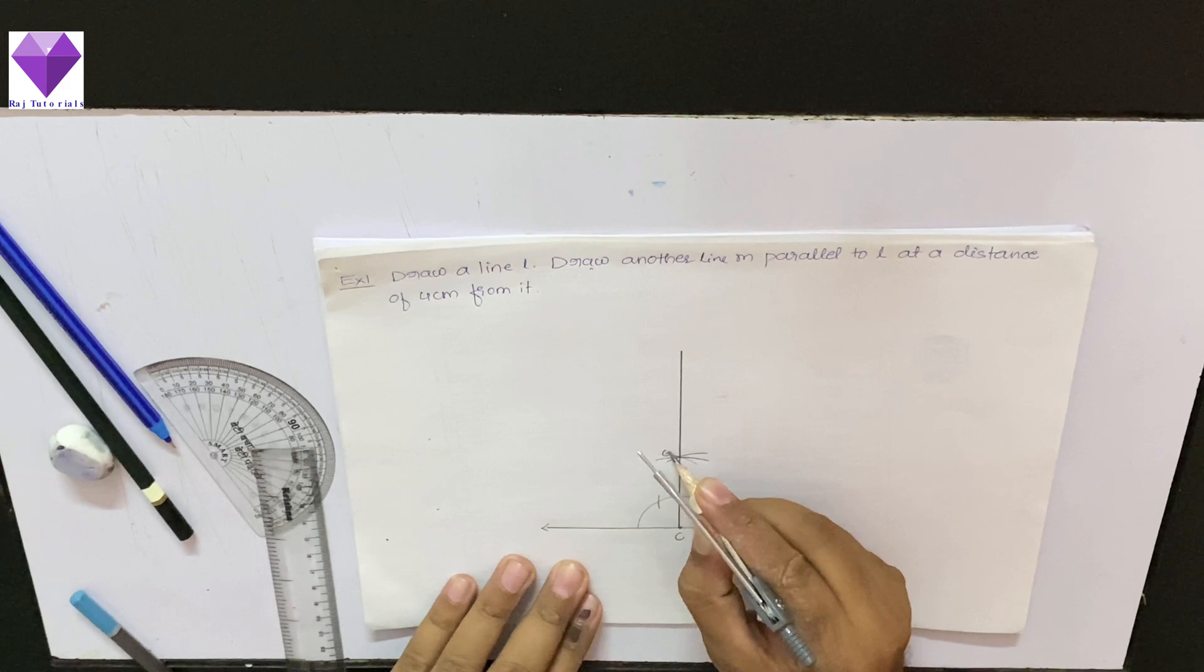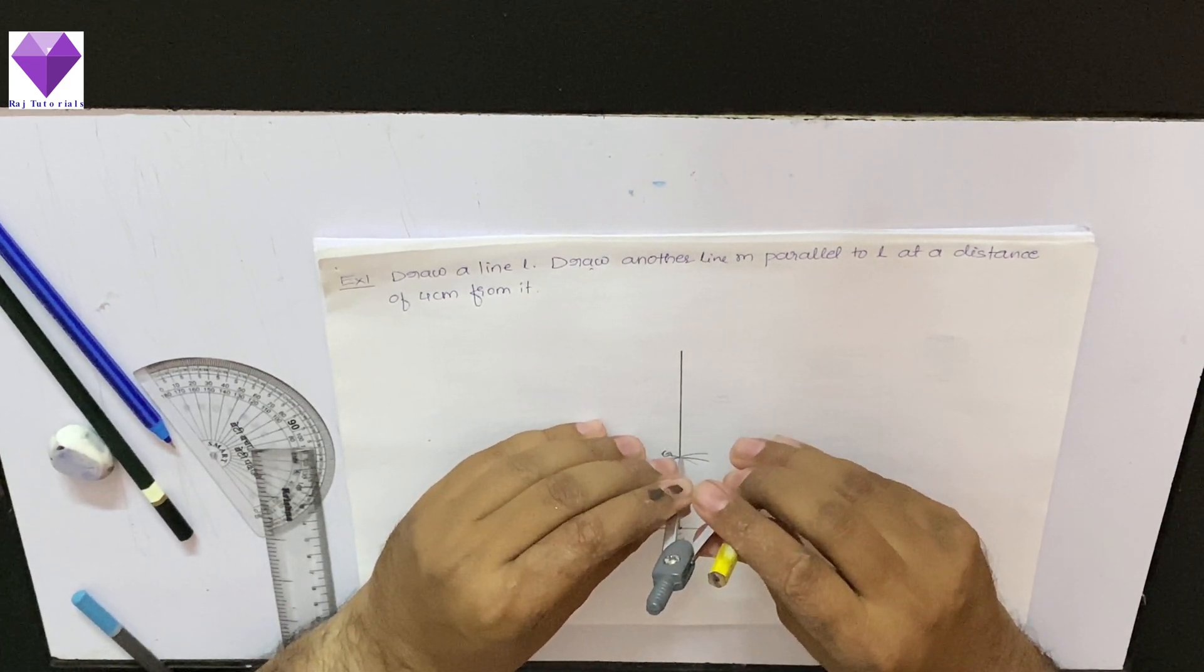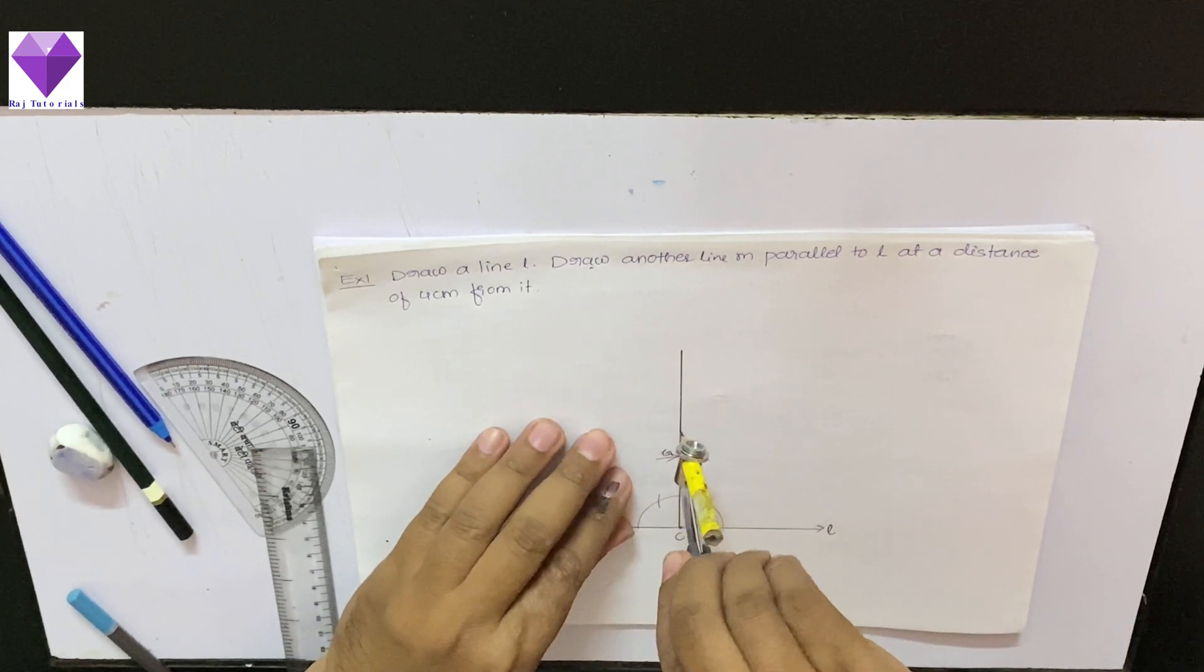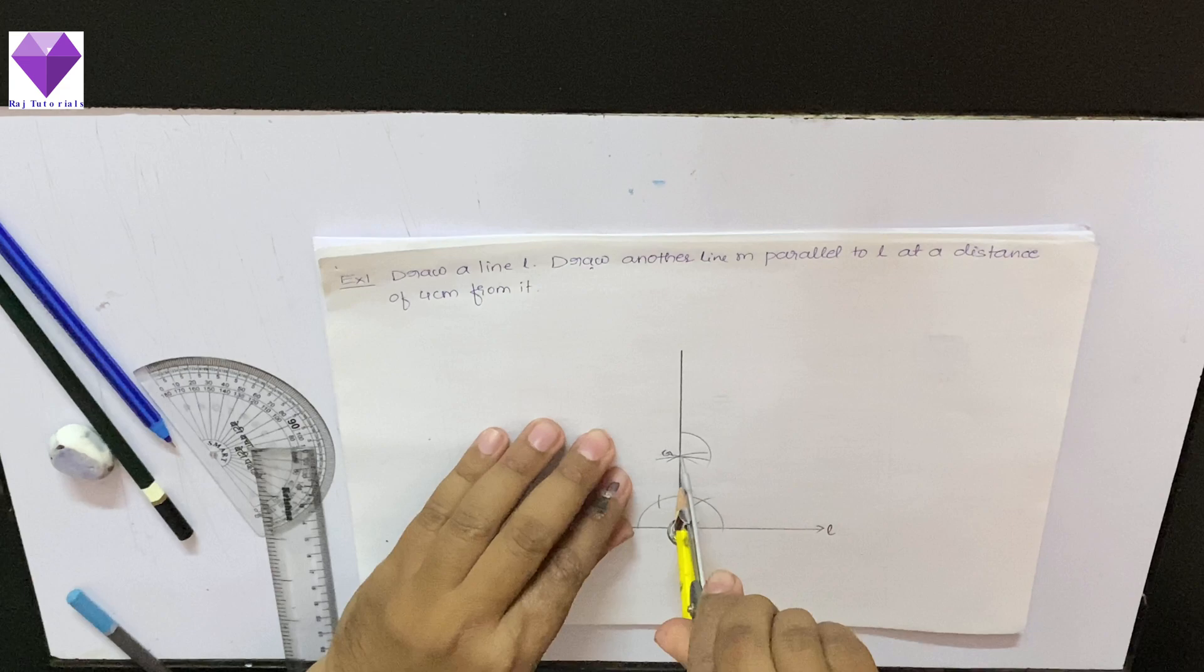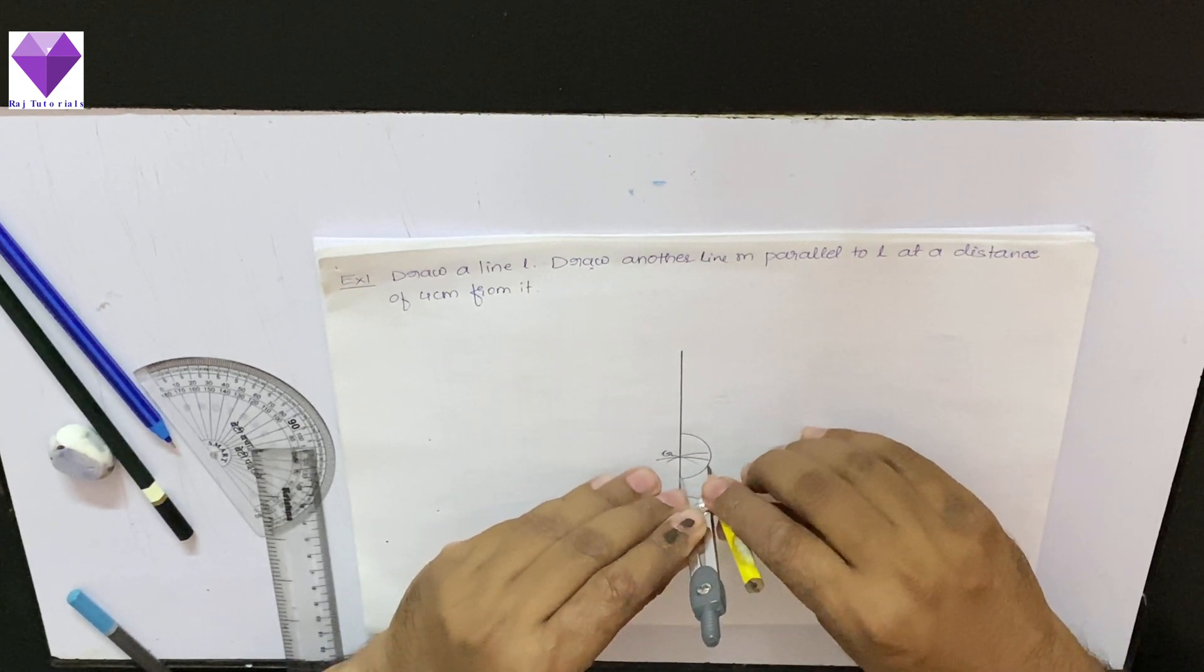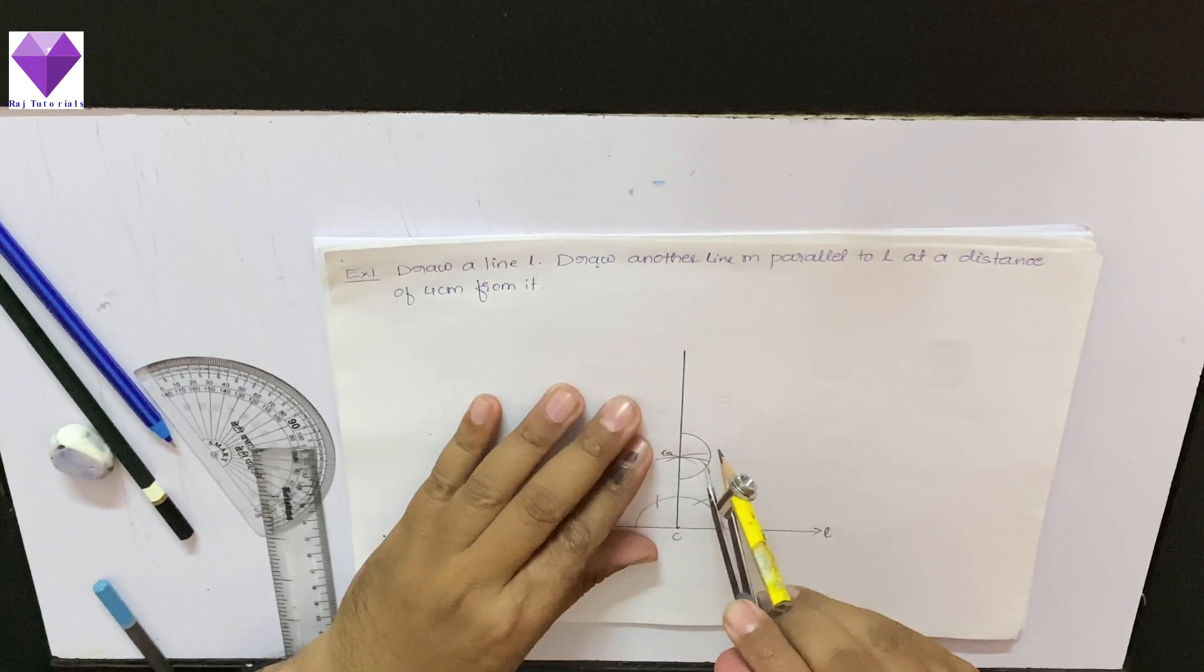I have to draw another line which is parallel to this line. So with G as center again I am drawing a semicircle of any radius, and without changing the radius I am drawing again two arcs, one is 60 angle, one is 120 angle.